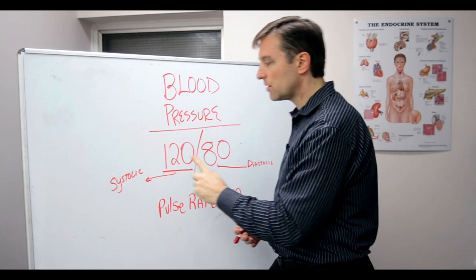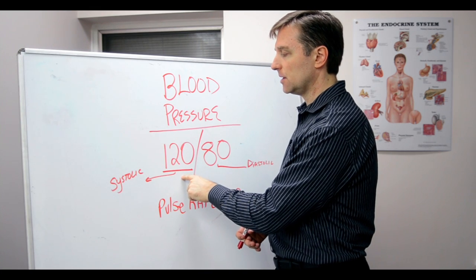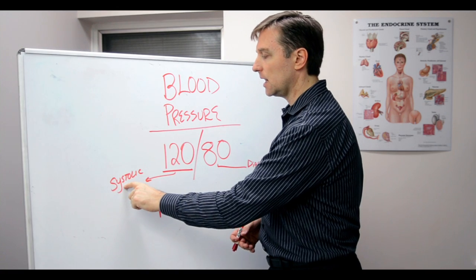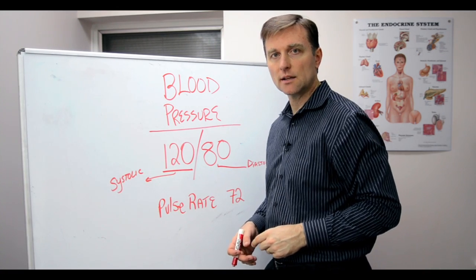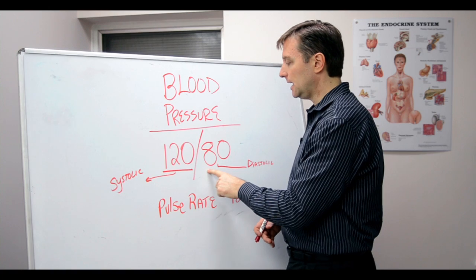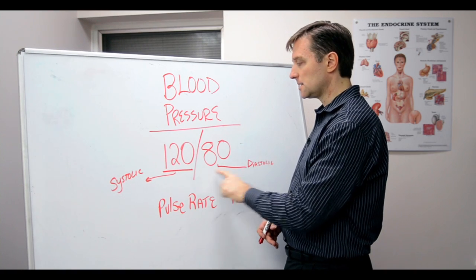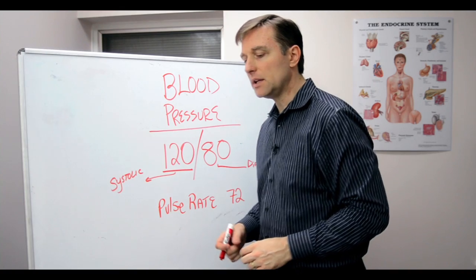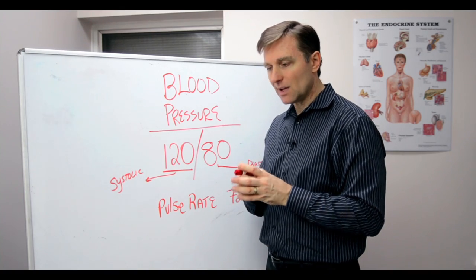So, the contraction pressure, it's called the systolic, should be 120 amount of pressure. And 80 is the diastolic, that's the bottom number, and that's the ability of the heart to relax.